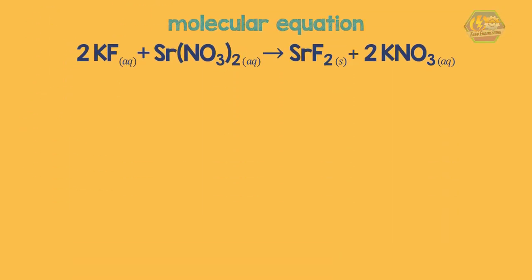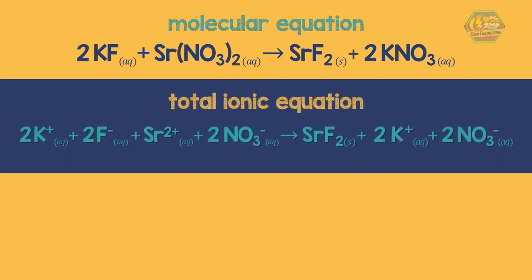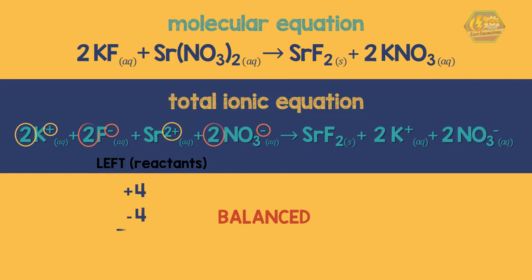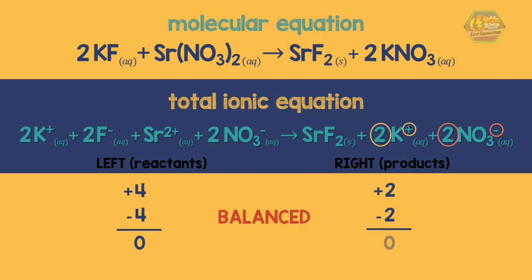Now, writing the total ionic equation. Here, the elements and charges are balanced. On the left, there are 4 positive and 4 negative which sums up to 0. On the right, there are 2 positive and 2 negative which sums up to 0 also.